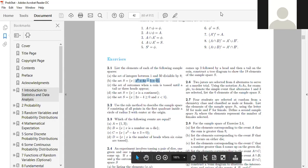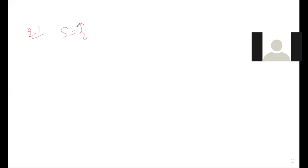Let me go over the whiteboard solution for Exercise 2.1. Part (a): S equals the set of all integers between 1 and 50 divisible by 8, which is {8, 16, 24, 32, 40, 48}. We stop because the next multiple, 56, exceeds 50.